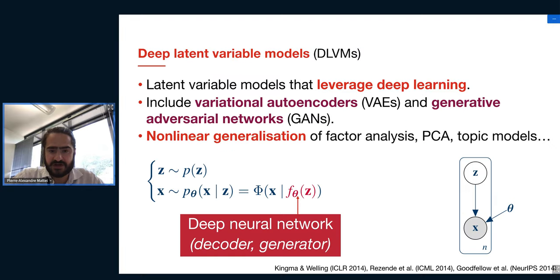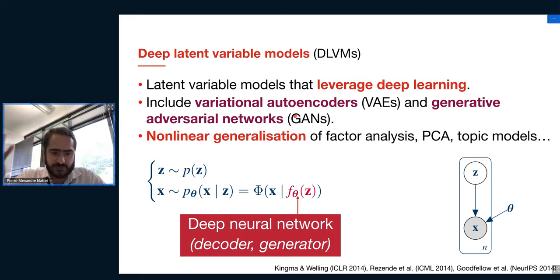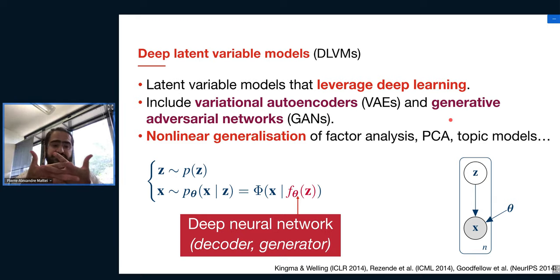I've been working in the past few years on deep latent variable models, or deep generative models, which are statistical models that use deep learning as a building block. The most famous examples are variational autoencoders (VAEs) and generative adversarial networks (GANs). One way to look at these is as non-linear generalizations of simpler, older models like PCA or factor analysis. The common theme is to summarize data into a code in a probabilistic fashion.